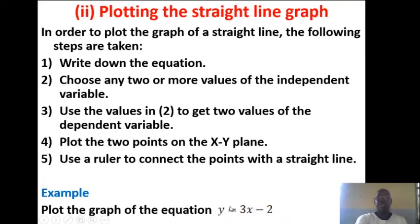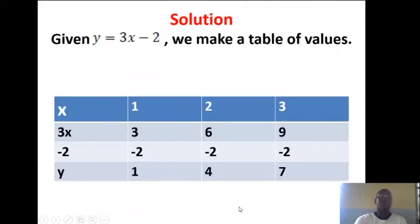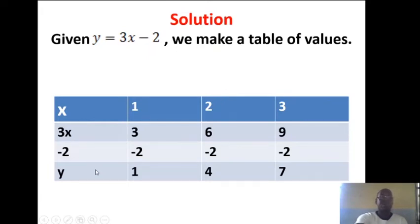For example, we have to plot the graph of the equation Y = 3X − 2. The solution: state the equation and make the table of values. The values of X are chosen to be 1, 2, or 3. The value of Y must follow the definition given by X, which is 3X − 2. So, 3×1 = 3, 3×2 = 6, 3×3 = 9. Subtract 2 everywhere to get the values of Y: 3 − 2 = 1, 6 − 2 = 4, and 9 − 2 = 7.